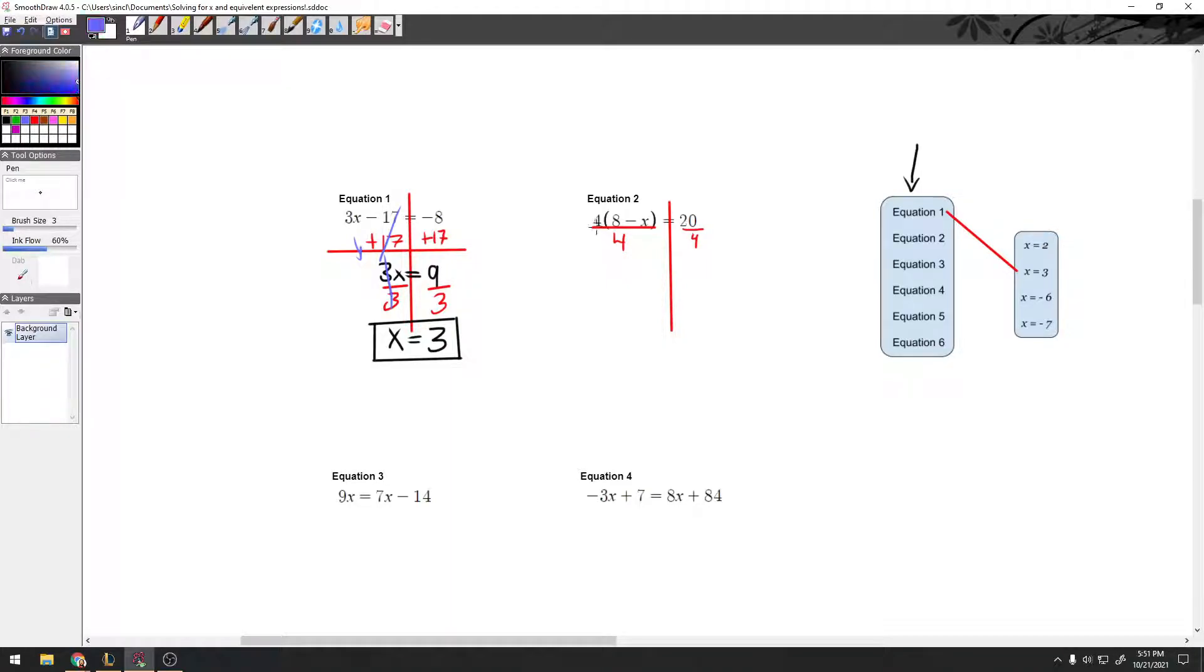What that's going to do is have these 4s cross out to 1, and then I don't need my parentheses anymore, because I got rid of that 4. So, my 8 minus x comes down, and 20 divided by 4 in my calculator is 5.